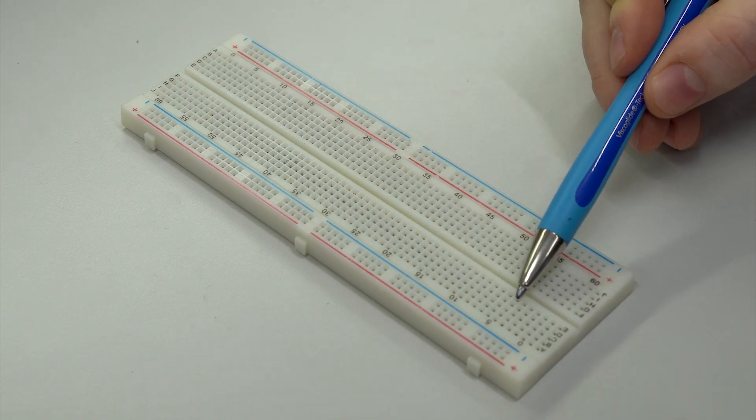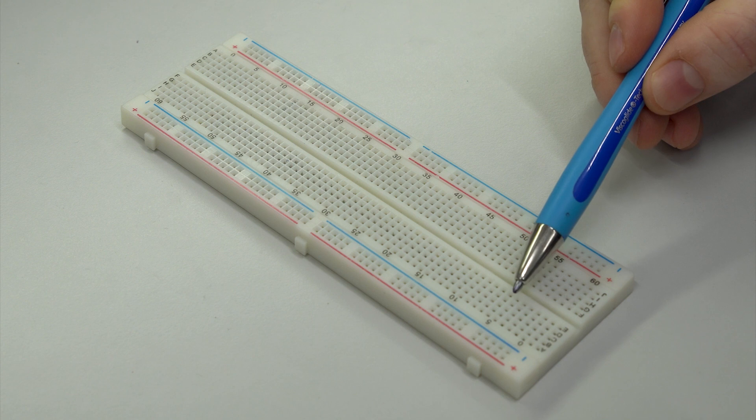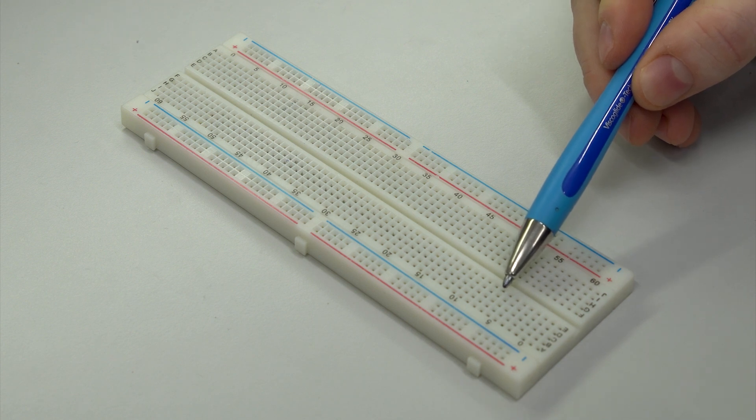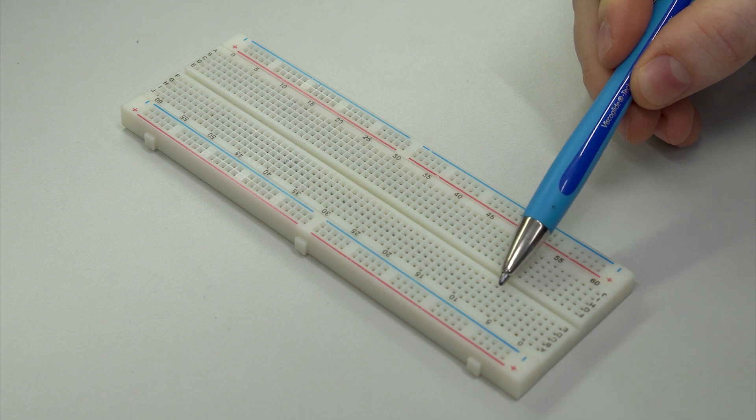The holes on the breadboard are usually 2.54 millimeters apart. This is the same distance the legs of through-hole components are apart.